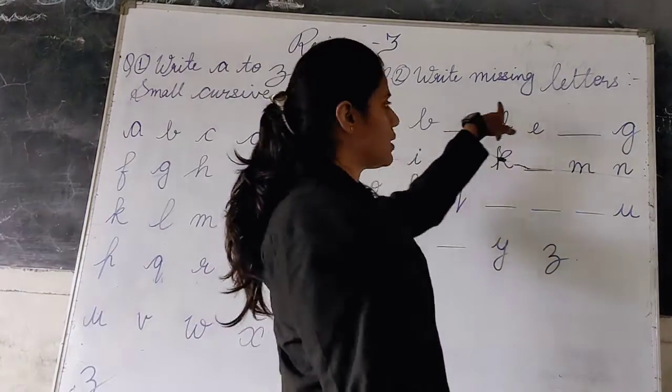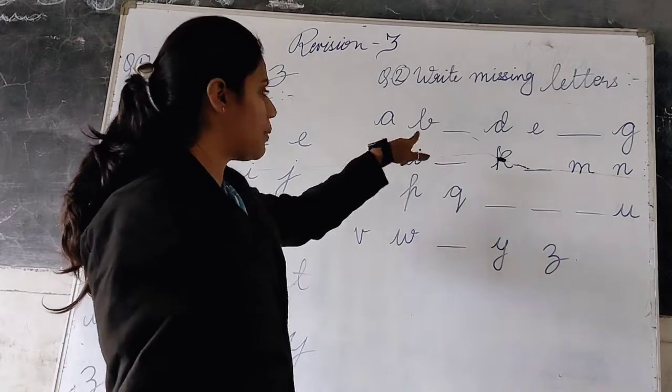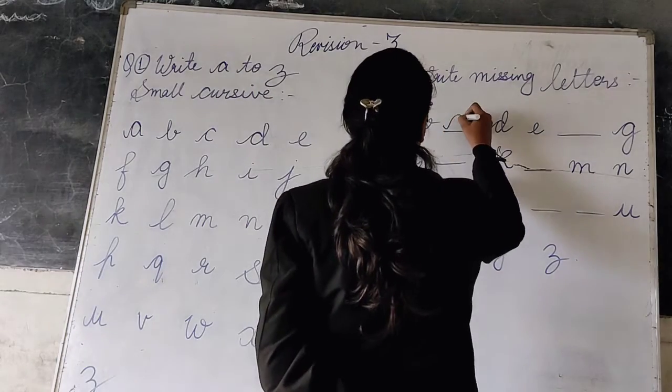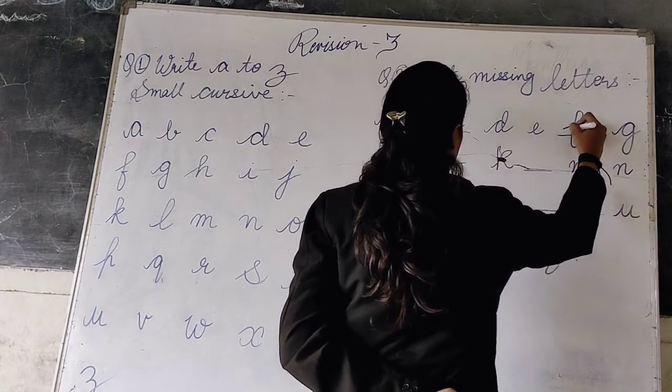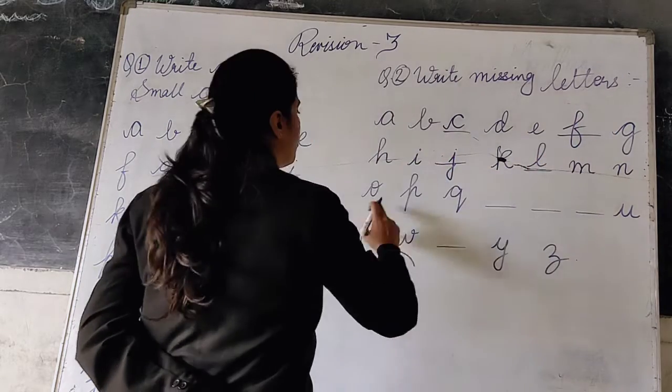Now question number 2nd is, write missing letters. We have to write the missing letters. A, B, then C, D, E, F, G, H, I, J, K, L, M, O, P.